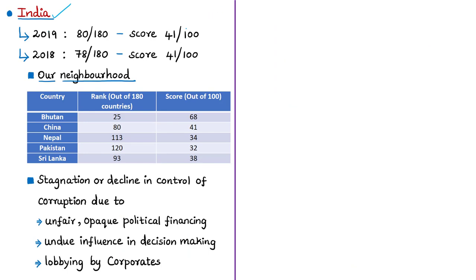According to the 2019 CPI, India is ranked at 80th position out of 180 countries with a score of 41 out of 100, which is less than the global average of 43. In the CPI 2018, India was placed at 78th position with the same score of 41. India has dropped to 80th position because some countries have improved their performance in tackling corruption, even though India's score remained the same, indicating no additional measures were taken.